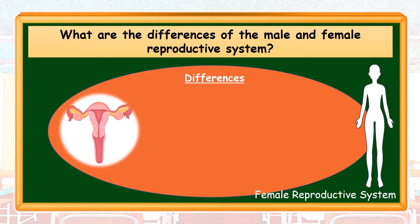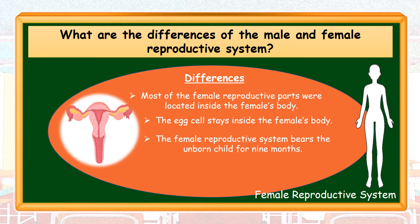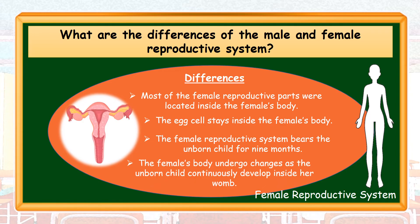However, there are also differences between both systems. Let's start with the female. Number one, most of the female reproductive parts are located inside the female's body. Number two, the egg cell stays inside the female's body. Number three, the female reproductive system bears the unborn child for nine months. And number four, the female's body undergoes changes as the unborn child continuously develops inside her womb.